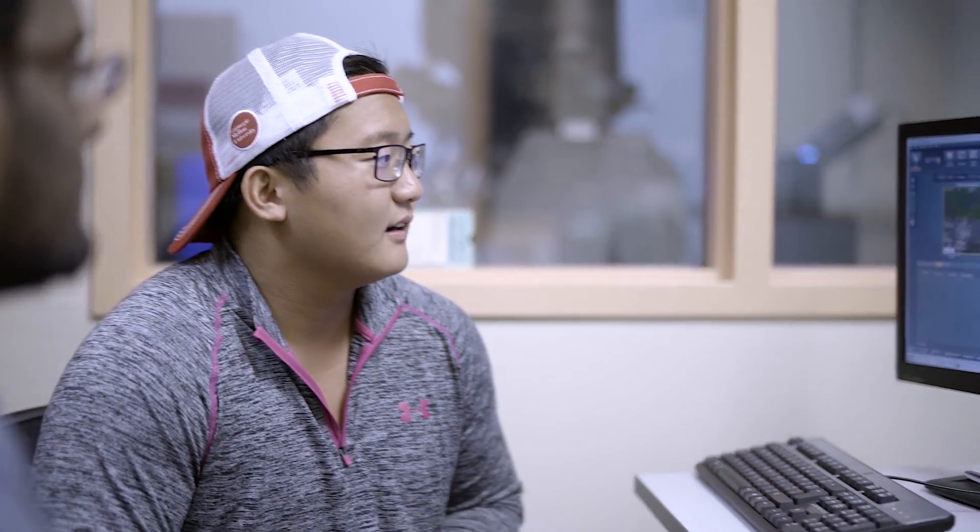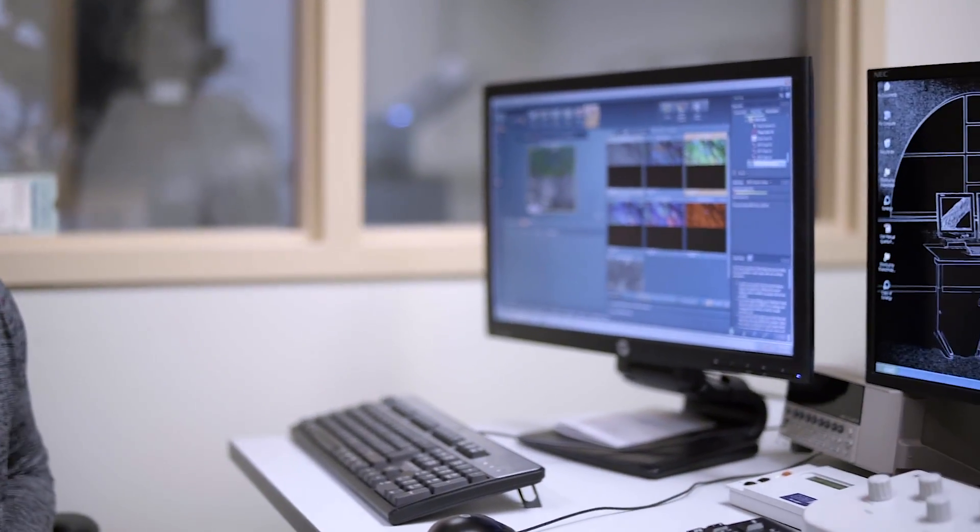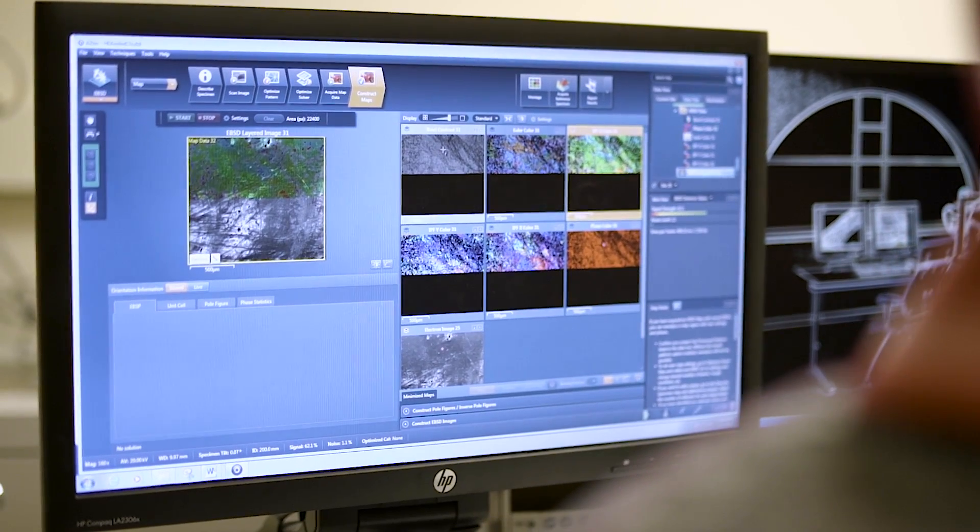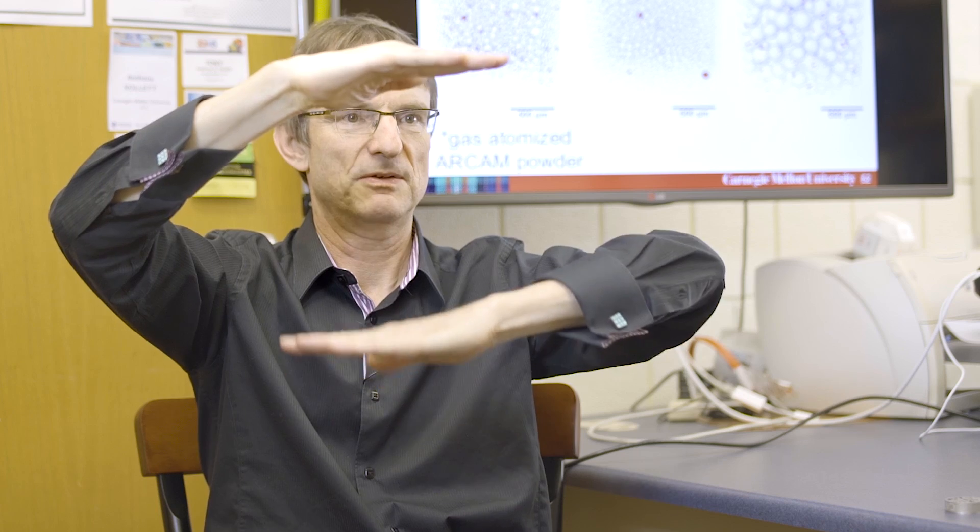Now another huge advantage of having access to this machine called a synchrotron is that you can do diffraction experiments. With the diffraction experiments what you're doing is you're bouncing the X-rays off the atomic planes in the material and so you are measuring the spacing between those planes. And if that spacing varies or is different from the spacing that's recorded in the books, then you know that you have some residual stress.